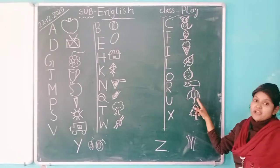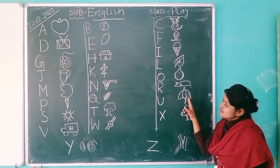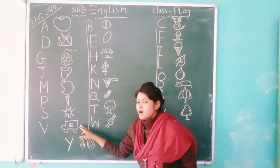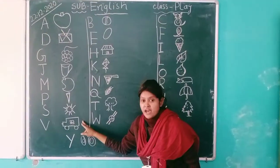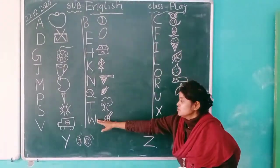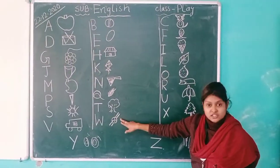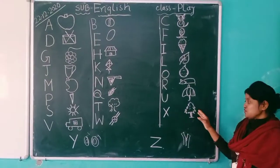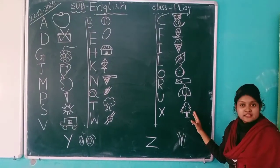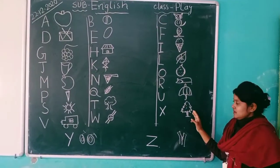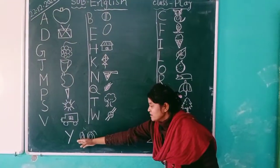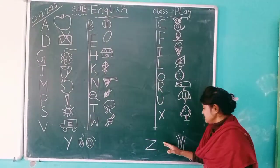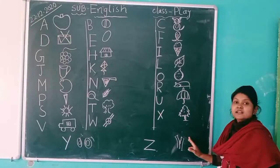We use umbrella in rain. Yes. Next, V. V for van. W. W for watch. Next, X. X for Christmas tree. Next, Y. Y for yoyo. Z. Z for zebra.